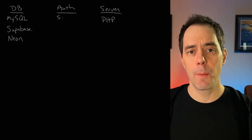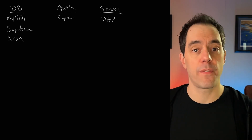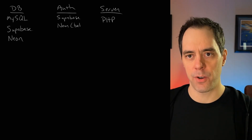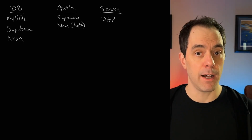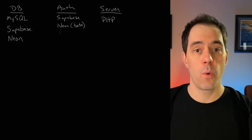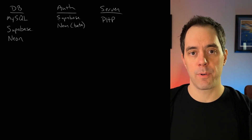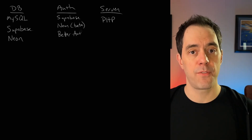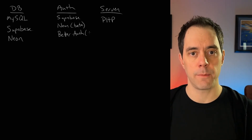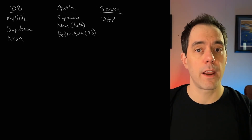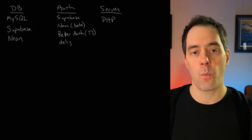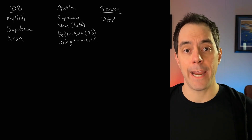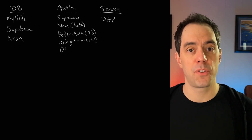For authentication, Supabase has it built in, so that's one option if I go with that as a database. Neon also has some authentication features, but right now that's in beta. If I end up going with Next.js or some other JavaScript/TypeScript-based server, I can use BetterAuth, a library for rolling your own authentication system. If I go with a PHP server, I can go with a library like Delight.im. Finally, I can use an OAuth solution like AWS Cognito, which is something I have used in the past.